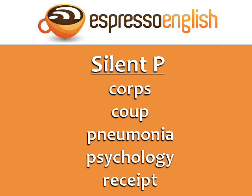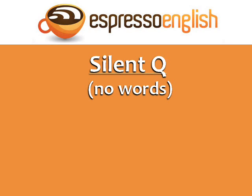Silent P. Core. Coup. Pneumonia. Psychology. Receipt. Silent Q — no words. Silent R — no words in American English. British English has some words with silent R.